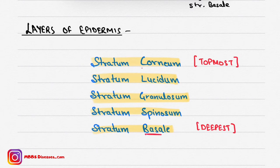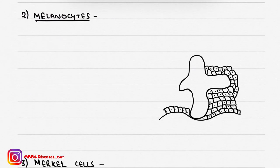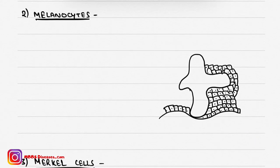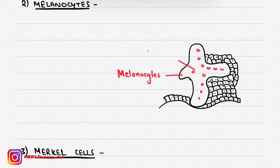Now coming to another type of cell: melanocytes. Melanocytes are present in the epidermis but are not as abundant as keratinocytes. As shown in this diagram, melanocytes form melanosomes, and these melanosomes are transferred to adjacent epithelial cells by dendrites.